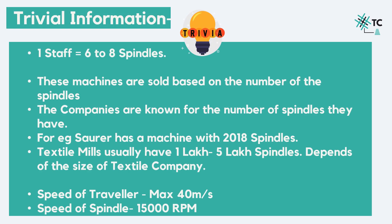We have come to the end of the video, but we'll discuss some additional information as well. One staff is equal to 6 to 8 spindles — it is a technical collective word for a bunch of spindles. In the market, these machines are sold based on the number of spindles that they have. The companies are known for the number of spindles they manufacture. For example, a company like Saurer has a machine with 2,018 spindles — so if you want a machine, you need to mention the number of spindles that you want. Textile mills usually have 1 lakh to 5 lakh spindles, depending on the size of the textile company. The speed of the traveler is a maximum of 40 meters per second, and the speed of the spindle is 15,000 RPM.